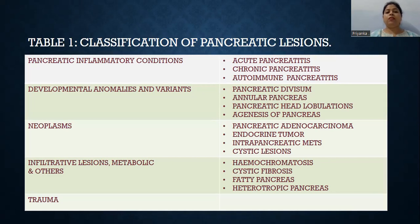The pancreatic inflammatory conditions include acute, chronic, and autoimmune pancreatitis. Developmental anomalies include pancreatic divisum, annular pancreas, pancreatic head lobulation, and agenesis of pancreas. The neoplasms include pancreatic adenocarcinoma, endocrine tumors, intraductal papillary mucinous neoplasms, cystic lesions, etc.